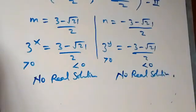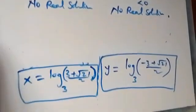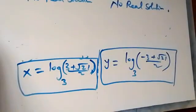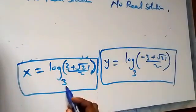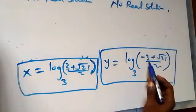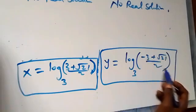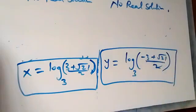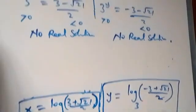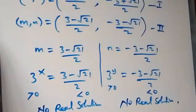Therefore, the only real solutions come from the first case: x equals log base 3 of (3 plus root 21 over 2), and y equals log base 3 of (negative 3 plus root 21 over 2). Thank you for joining us — subscribe for more exciting videos, turn on the notification bell, share this video, give it a thumbs up, and see you next class.